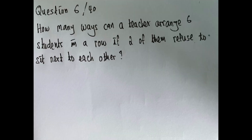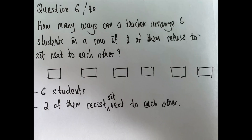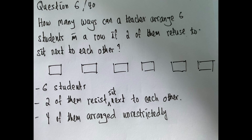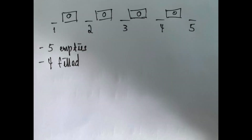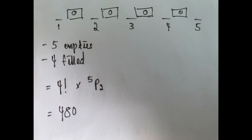For question 6, the question asks us to find ways a teacher can arrange 6 students in a row if two of them refuse to sit next to each other. Four students are arranged randomly, filling 4 seats, which leaves 5 possible gaps for the two students who don't want to sit together. The final calculation is 4 factorial times 5P2, which equals 480.